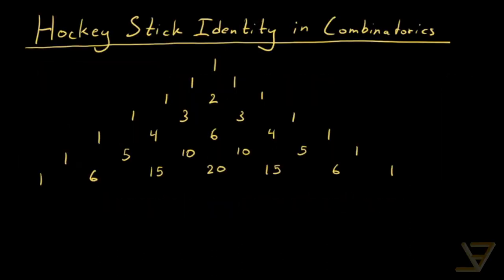Hi everyone, let's talk about the hockey stick identity in combinatorics. We start with Pascal's triangle like this and we start with the rightmost entry of one of the rows of Pascal's triangle.